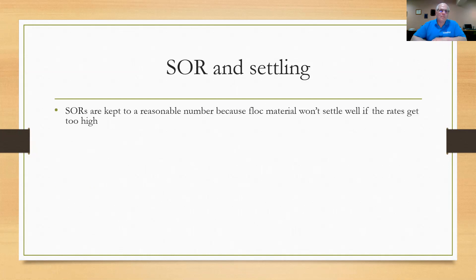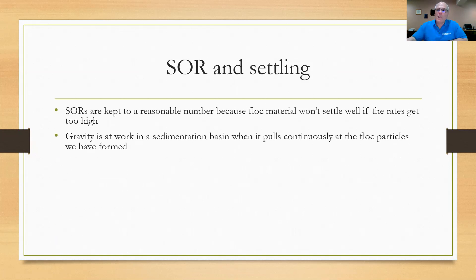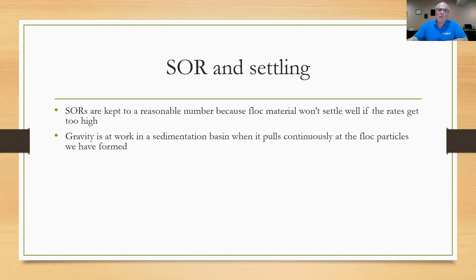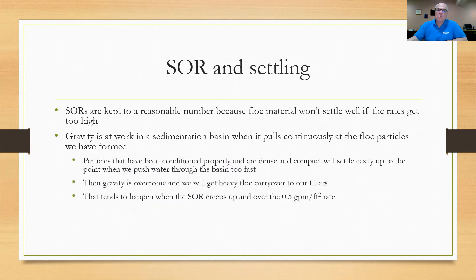Surface overflow rates are kept at a reasonably low number because floc material is not going to settle if our rates get too high. That's why we want to know how to calculate surface overflow rate — it tells us if the floc is not going to settle properly. Gravity pulls down on the floc particle continuously, but we're going to overcome that if the flow through our basin is too aggressive. Particles settle because they're dense and compact, up to a point. When that point is reached, things won't settle properly because we overcome gravity when the surface overflow rate creeps above 0.5 gallons per minute per square foot.